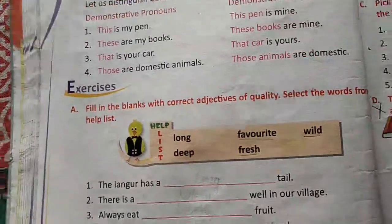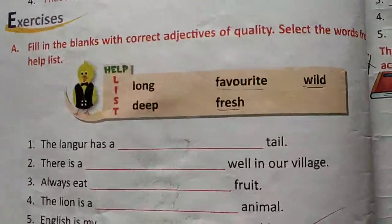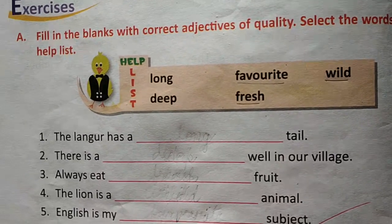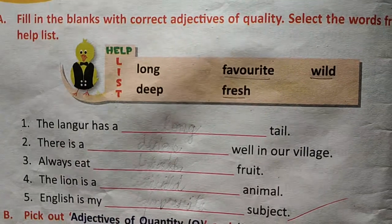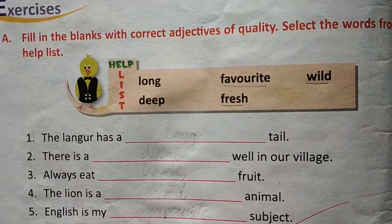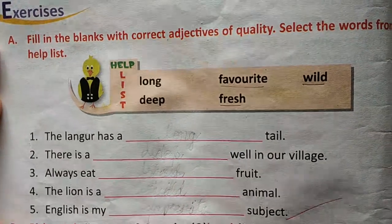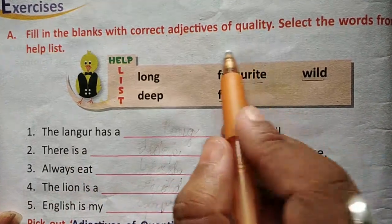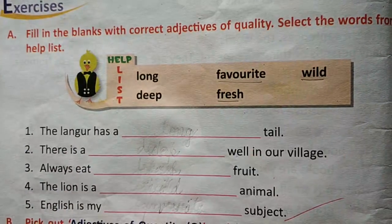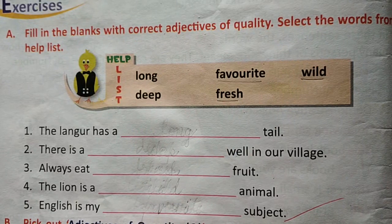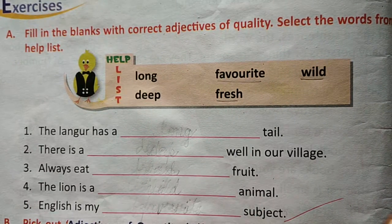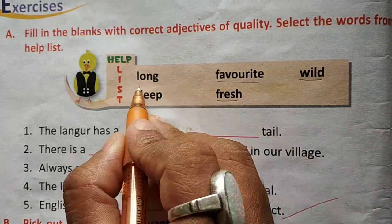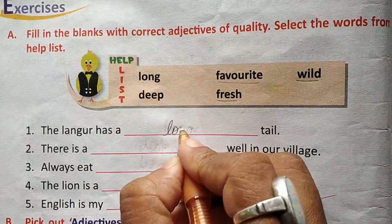Exercise A on page number 40. You are asked to fill in the blanks with correct adjectives of quality, selecting words from the help list. The first sentence: 'The langur has a ___ tail.' Adjectives of quality tell us what kind of person, place, animal, or thing something is. So, the langur has a long tail.